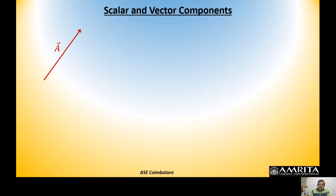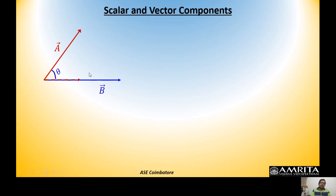Scalar and vector components will be used extensively in the next two or three classes when we talk about different orthogonal coordinate systems — cylindrical and spherical polar. When we project one vector onto another, we get either a scalar or vector component. Say we have vector A and vector B making an angle θ between them; sweeping A onto B gives the projection of A onto B.